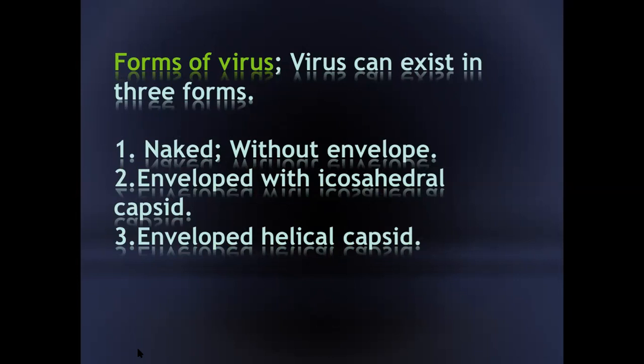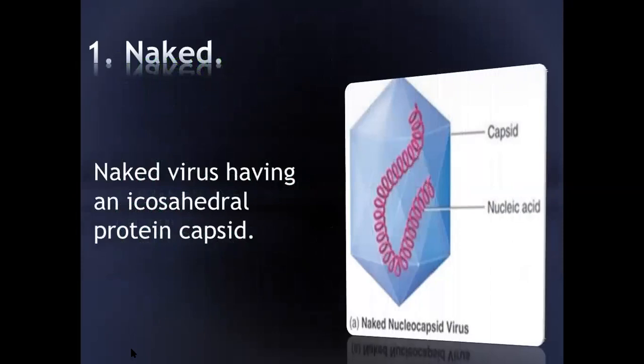As we can see in this picture, the first form is a naked virus, where the protein capsid is covering the viral genome and there is no lipid envelope covering it. A naked virus has an icosahedral protein capsid.